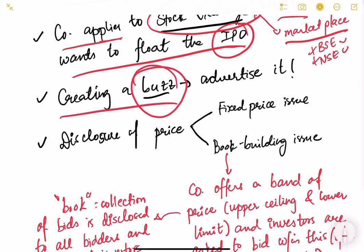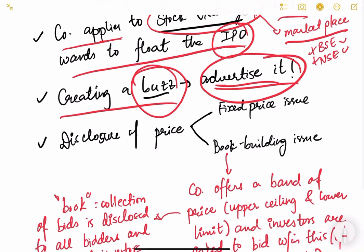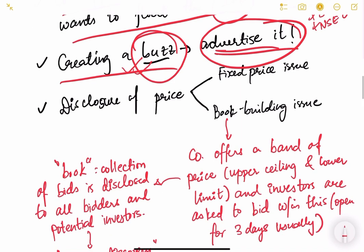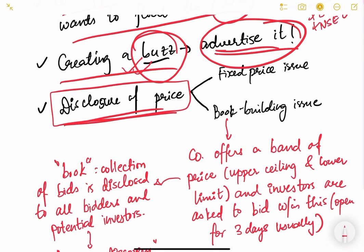After selecting the stock exchange, the most important part is creating a buzz — advertising the IPO. The company has to do a lot of advertisement so that the general public knows about it, through newspapers, news channels, and different media. Sometimes even Bollywood stars are hired to do these advertisements. They create a buzz so that the general public knows about the upcoming IPO.